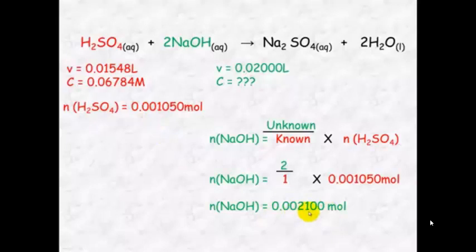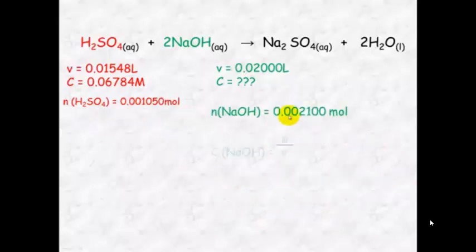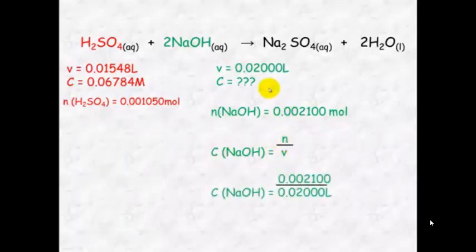So we will now use this number of moles here and we can calculate the concentration using C equals n over V. We have got the volume up here so we can calculate the concentration and we will get an answer of 0.1050 molar.